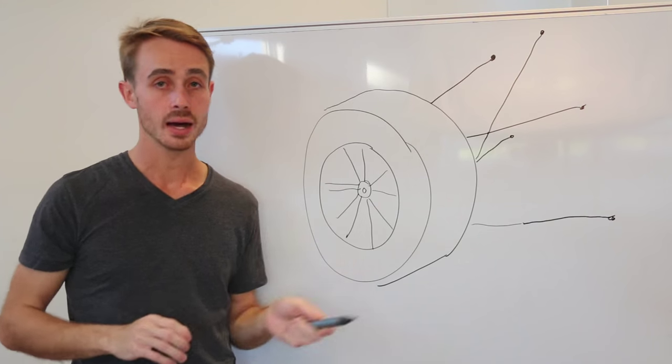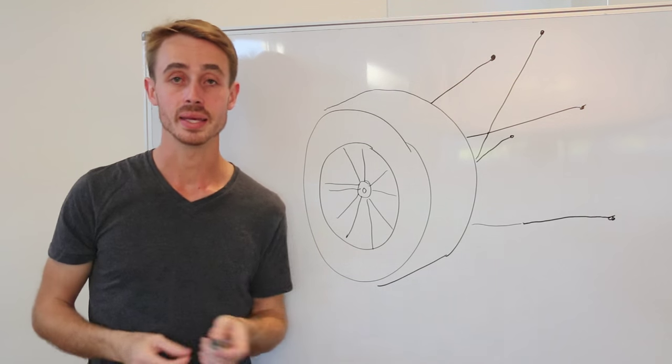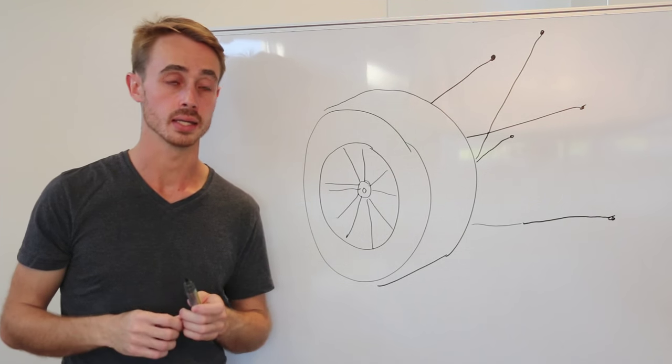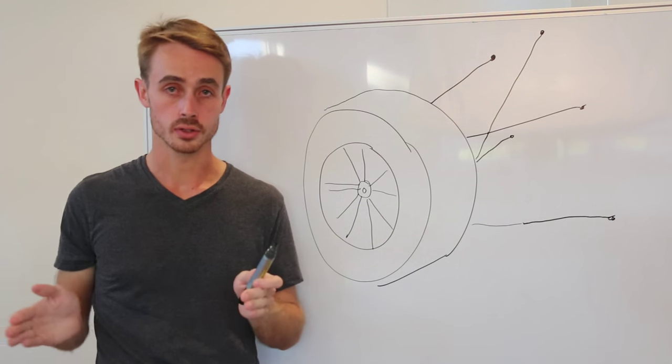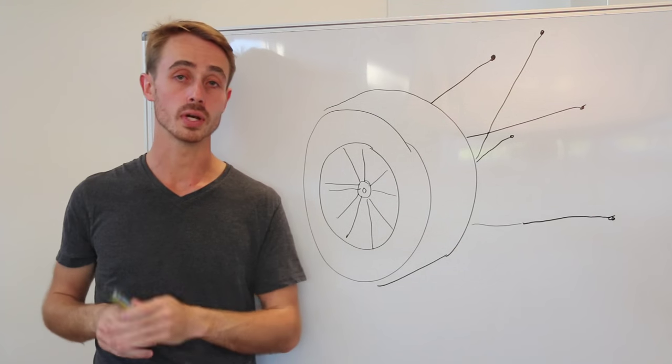Now specifically we're going to be looking at caster, camber, kingpin inclination angle and scrub radius. These are all different concepts so I'm going to split them up into four different videos.